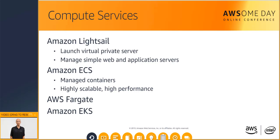Do you use container services on-premises? Amazon Elastic Container Service, or Amazon ECS, is a highly scalable, high-performance container management service that supports Docker containers and allows you to easily run applications on a managed cluster of Amazon EC2 instances. Amazon ECS eliminates the need for you to install, operate, and scale your own cluster management infrastructure. AWS Fargate is a technology for Amazon ECS that allows users to run containers without having to manage servers or clusters.